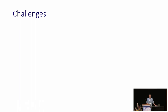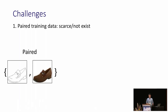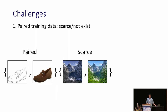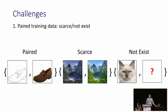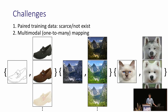There are some challenges in image-to-image translation. First, although some translations can be learned with paired training data, in most cases paired training data is scarce or even does not exist. Second, most translations, whether paired or not, are in nature multi-modal, that is, a one-to-many mapping.